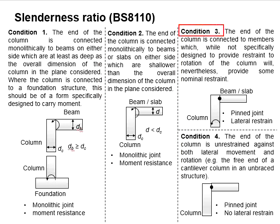As for condition 3, it is referring to the pin joint between the beam and the column. The column at the end is not specifically designed to provide resistance to the rotations. However, the column itself provides some nominal restraint.